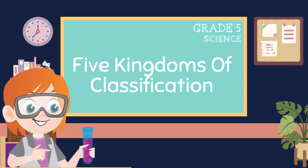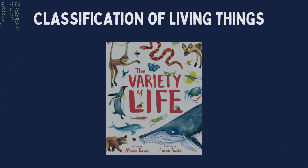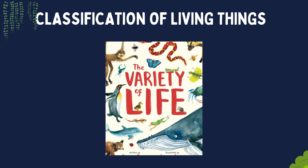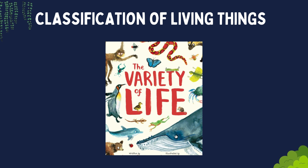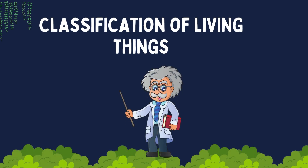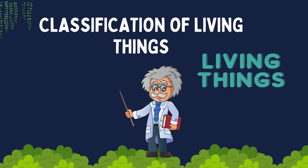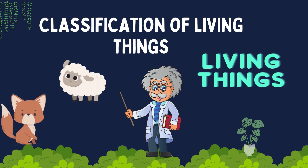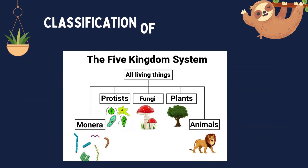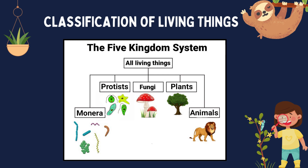Hello students, today we are going to learn about five kingdoms of classification. Have you ever stopped to wonder about the variety of life that exists in the world? Isn't it truly amazing? Did you know that scientists used to believe there were only two main groups of living things: animals and plants? It wasn't until later that they discovered there were more categories to classify them. So let's explore the different groups of living organisms together and see how they are classified.